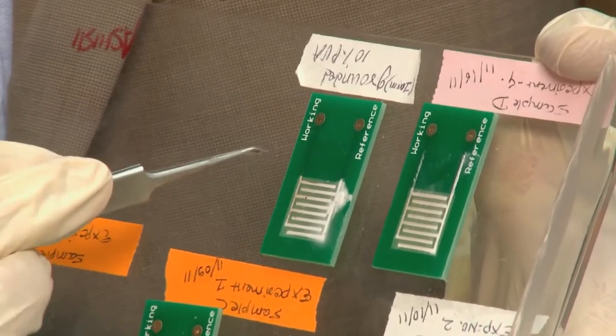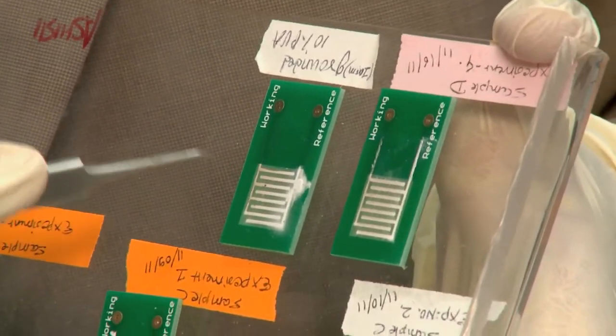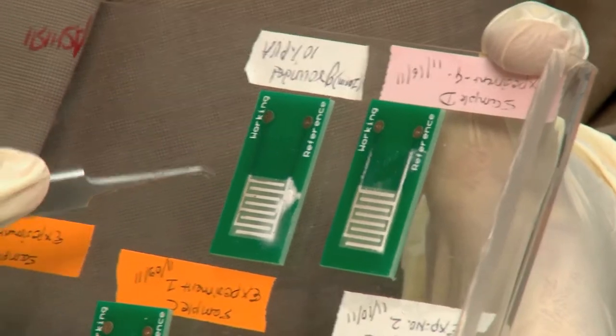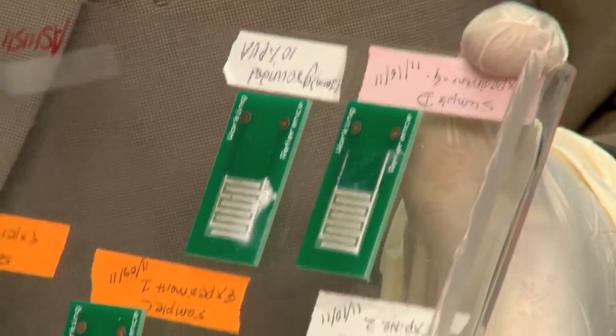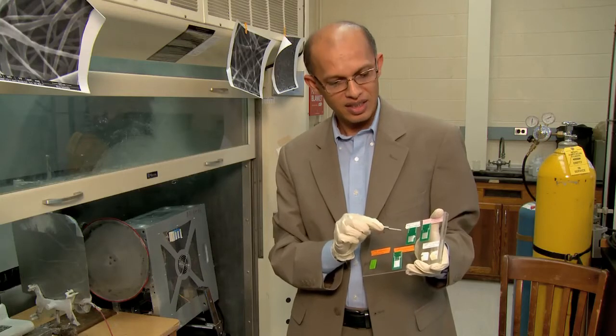You can see in my hand, I'm holding some microchips and these microchips have digitized patterns on them. On those patterns, we grow our nanoscale structures. Then using this, we can determine the marker for heart disease.